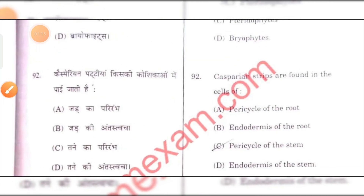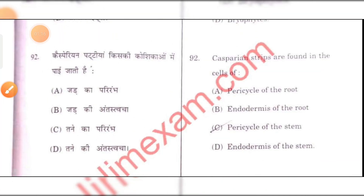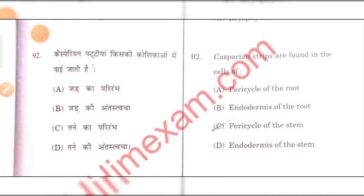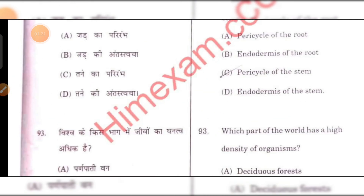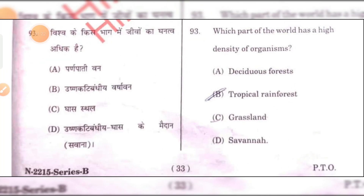Casparian strips are found in the cells of the endodermis of the root, or we can say the endodermis of the stem.